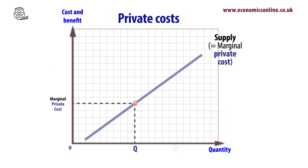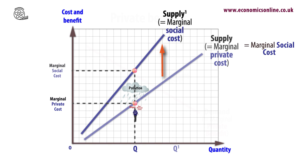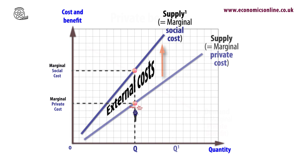A firm's decision to supply is based on expected private costs of production, such as wages and raw materials, which increase with output. If there is no external cost, marginal private costs equal marginal social cost. In reality, the production of many goods creates an external cost, including environmental damage from pollution. Graphically, if we add external costs to private costs, the social cost curve shifts up to the left.